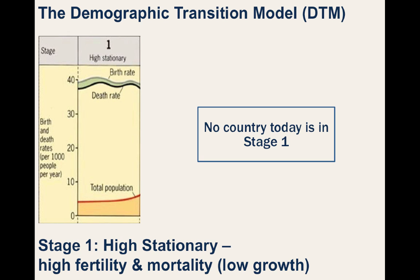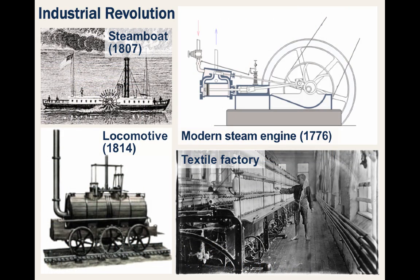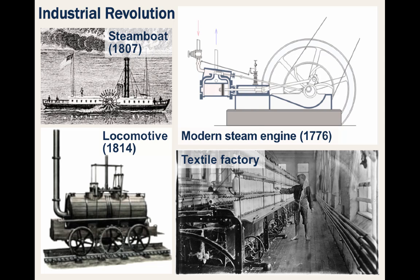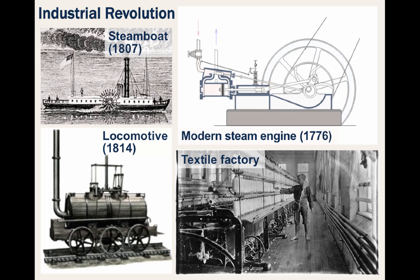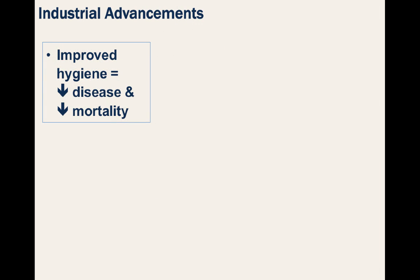The Industrial Revolution began in Great Britain, bringing innovations such as the steam engine, which in turn led to factories, steamboats, and locomotives, connecting people like never before. Other innovations led to a massive increase in food production, and other scientific advancements dramatically improved hygiene and living standards, starting in the United Kingdom.